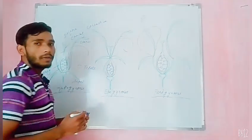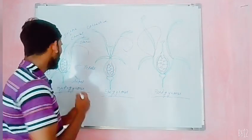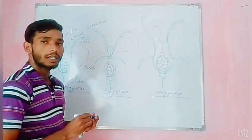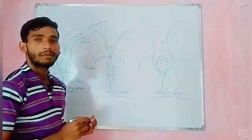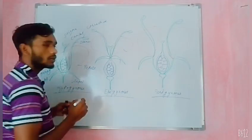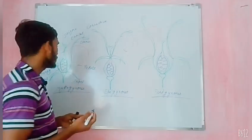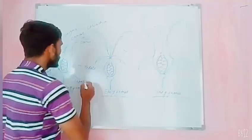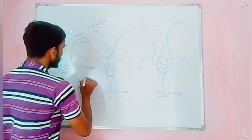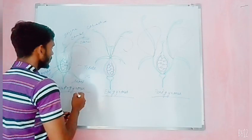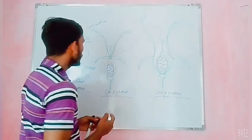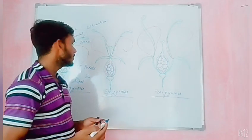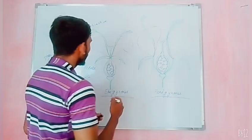If the sepal, petal, and stamens are arranged below the ovary, such a condition is called hypogynous condition. When the condition is hypogynous, the ovary is superior. This is the sign of a superior ovary.